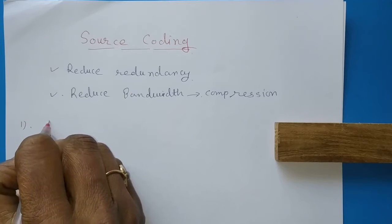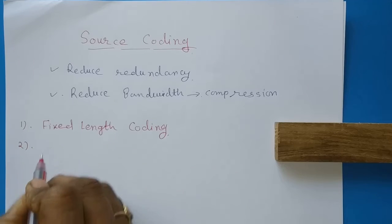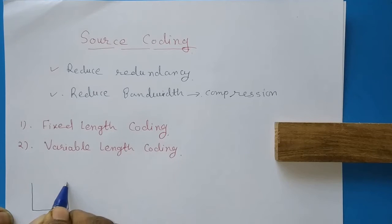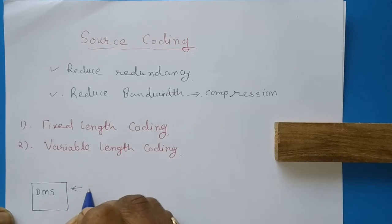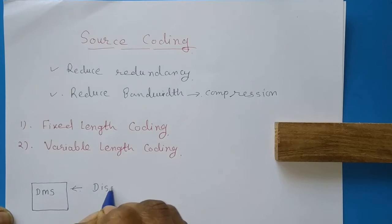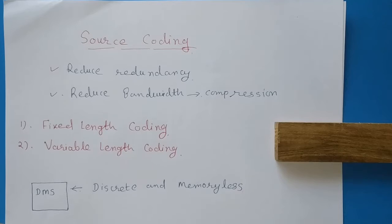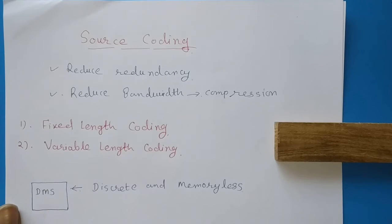In source coding we have two terms: fixed length coding and variable length coding. Consider a discrete memoryless information source. A memoryless source is one where the probability of occurrence of a particular symbol does not depend on the previous symbol, because it doesn't have memory, and it generates symbols in a discrete manner.